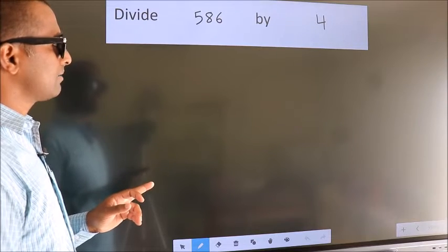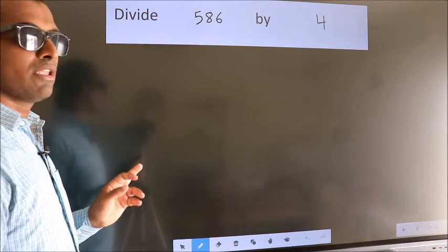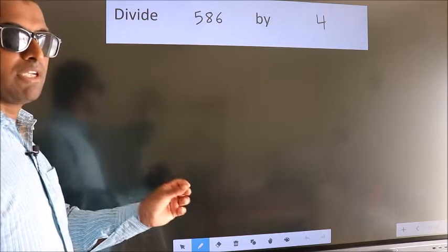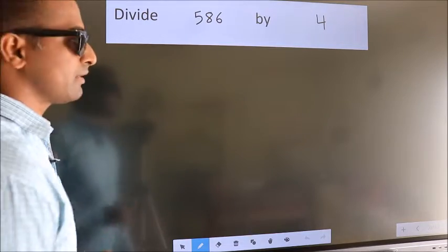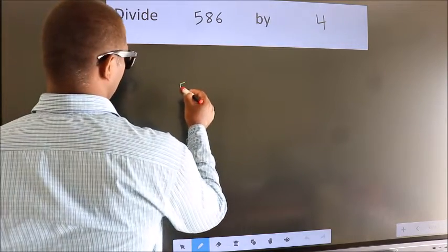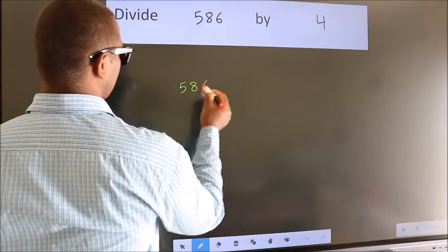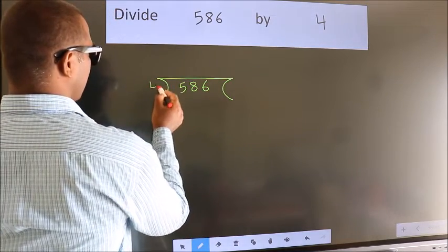Divide 586 by 4. To do this division, we should frame it in this way. 586 here, 4 here.